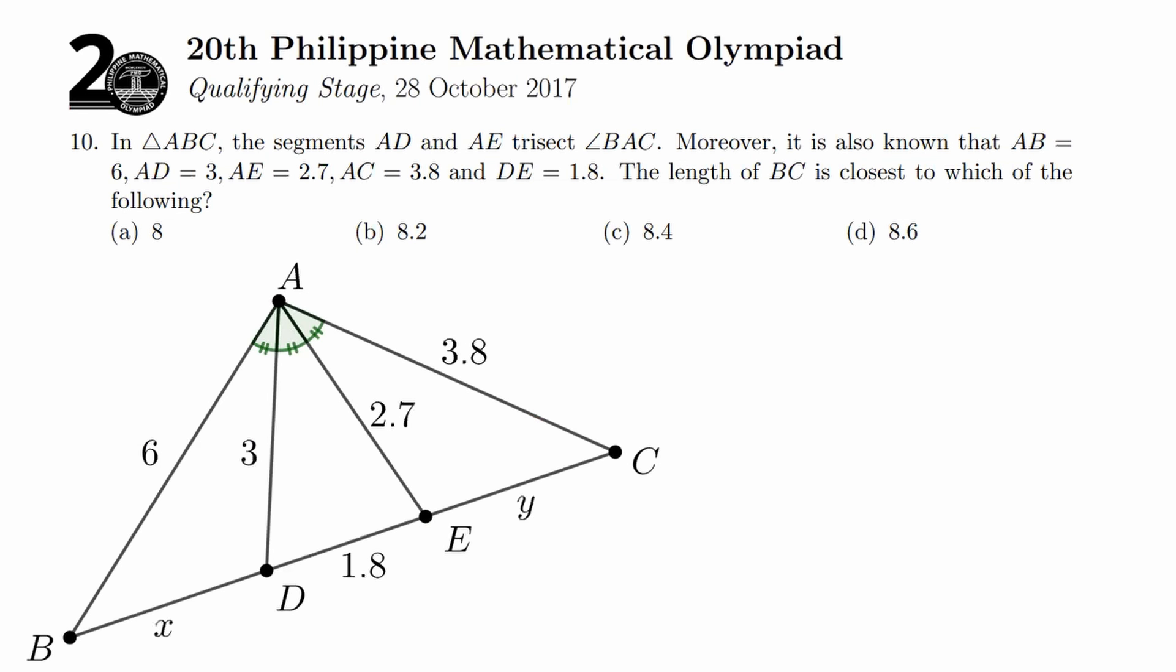There are two other segments which make up segment BC. Let their lengths, segments BD and CE, be X and Y respectively. So we need to figure out what they are. In the red triangle ABE, AD is an angle bisector. So again, we can use the angle bisector theorem. We get the following: X over 1.8 equals 6 over 2.7.